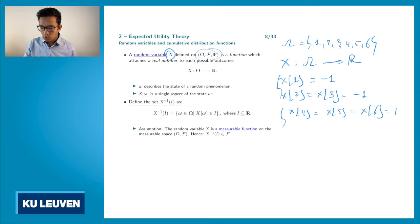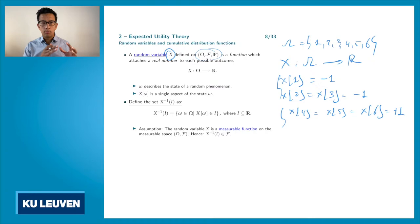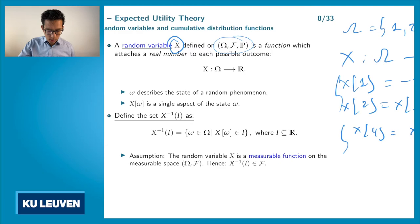Whereas X(4), X(5), and X(6) give you plus one, because if you throw four, five, or six, the random variable X tells you that you earn one euro. So we have the random experiment and a probability space to describe the possible outcomes, and the random variable X describes a single aspect of each of the possible outcomes omega of my random experiment.